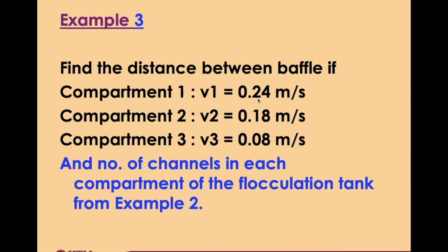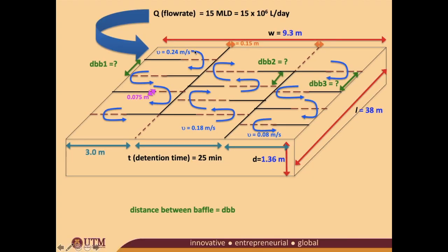In the first compartment, the speed is 0.24 meters per second. When it enters the second part of the flocculation tank, the speed is 0.18 meters per second — meaning there must be different distances between baffles, so DBB stands for distance between baffles. DBB1 is another value we need to calculate. In the third compartment, the speed is 0.08 meters per second.